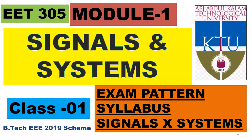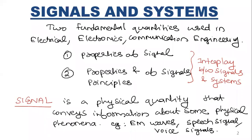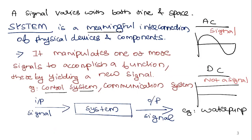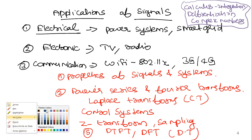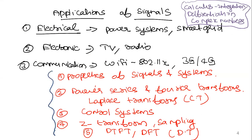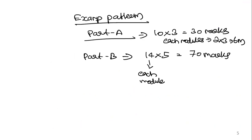I hope everyone has followed today's introductory session. We discussed what a signal is, what a system is, how a system brings about a change in a signal to give a desired output, and the applications of signals. We also covered the five modules of the coursework, the prerequisites — calculus, integration, differentiation, and complex numbers — and the exam pattern. Thank you.